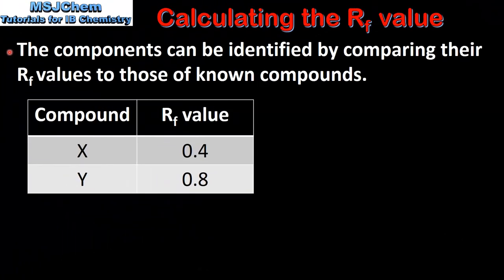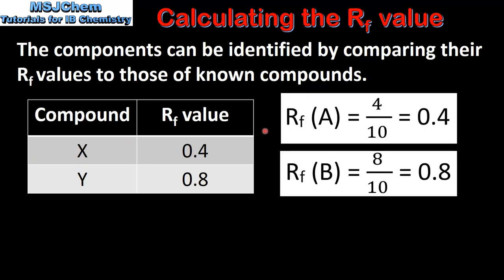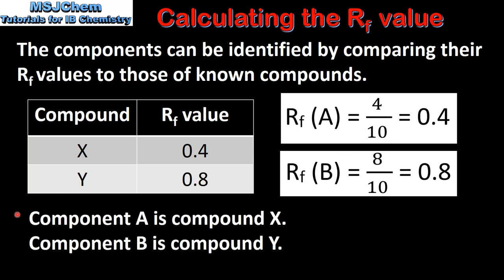The components can be identified by comparing their retention factor values to those of known compounds. In this table we have compound X and compound Y with their retention factor values. By comparing the retention factor values we can see that component A is compound X and component B is compound Y.